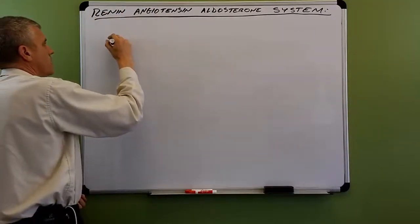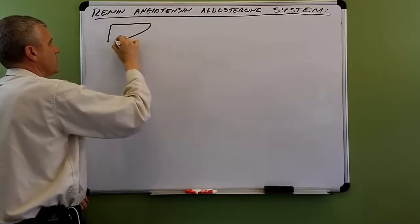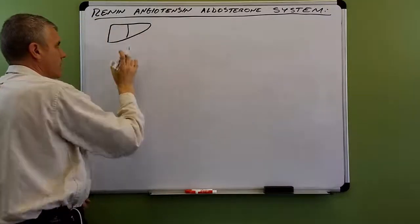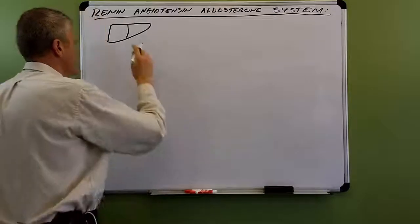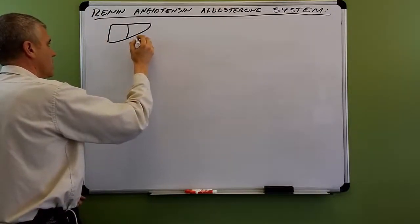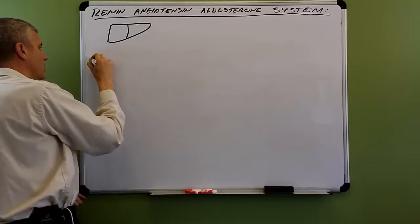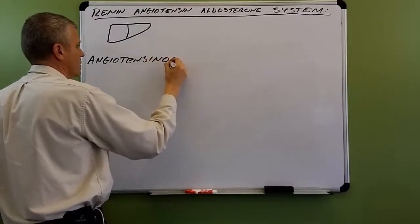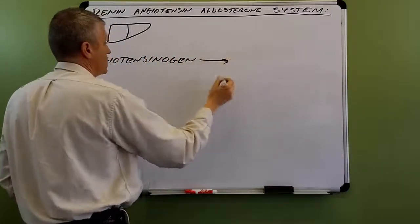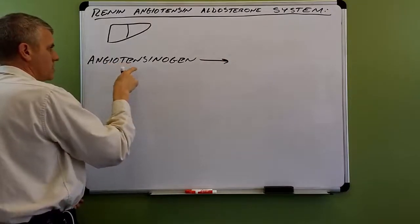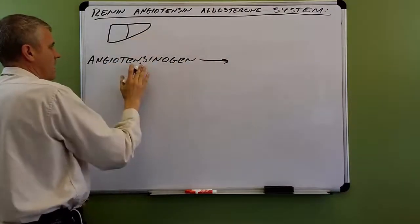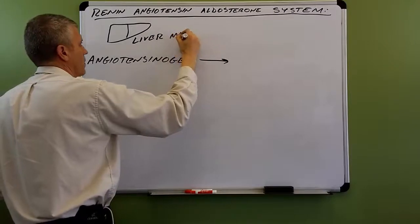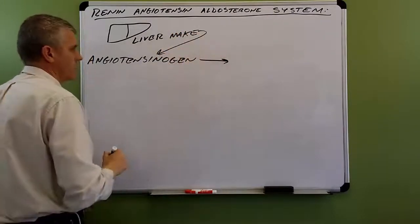To start off, I like to draw an image of a liver. The liver is a large organ in your upper right abdomen and is considered part of the digestive system. But it's also a gland — it makes a particular hormone or prehormone called angiotensinogen. Angiotensinogen is a prehormone, so it's not an active hormone yet. The liver makes angiotensinogen.